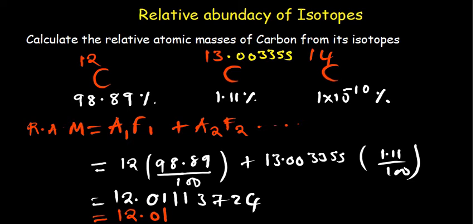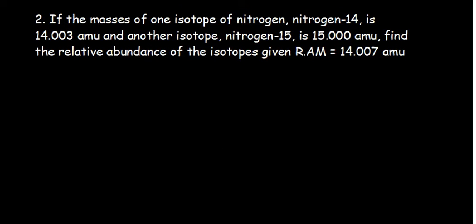This applies to all the other elements with isotopes—carbon, copper, bromine, chlorine. Given these isotopes, we should be able to find the relative atomic mass if you're given the abundance. What if they give us the relative atomic mass and ask us to find the relative abundance? How do you go about that? That's the second question.